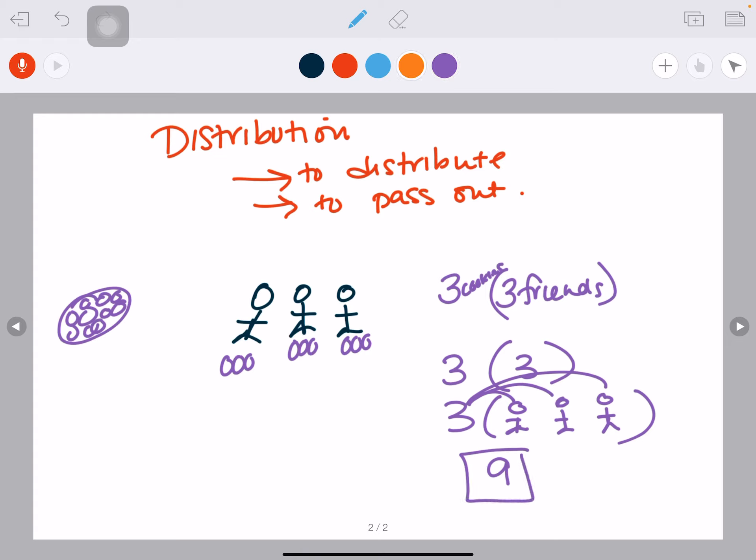So notice how I'm showing you that I gave three to this person and three to this person and three to this person. And then I'm adding it all up. There were three cookies and I added it to three cookies and I added it to three cookies and I got that I passed out nine cookies. So that's what distribute means.